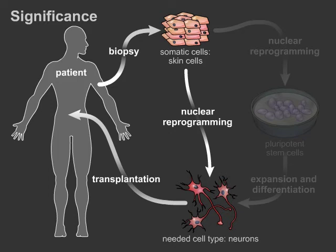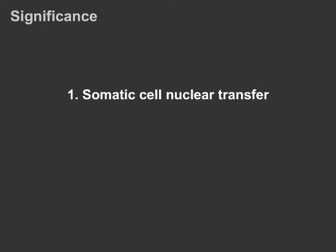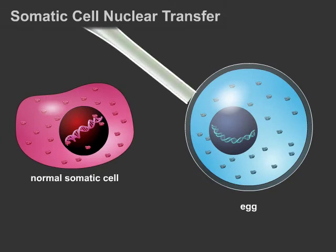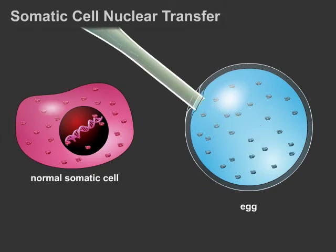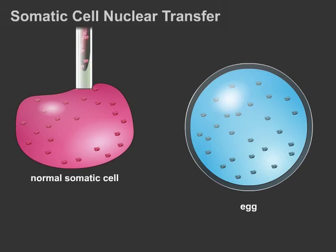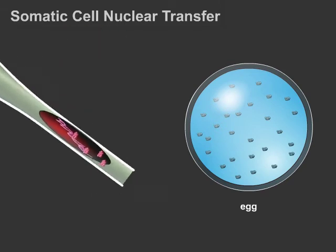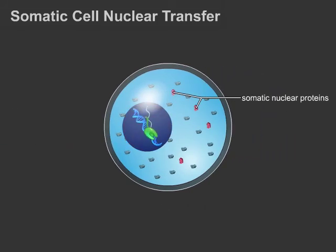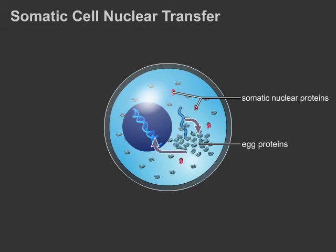There are currently three methods for achieving reprogramming: somatic cell nuclear transfer, cell fusion, and direct reprogramming. In somatic cell nuclear transfer, the nucleus of a somatic cell is injected into an egg that has had its own chromatin removed. When the donor nucleus is transferred to an enucleated egg, some somatic proteins are also transferred. However, the large volume of egg cytoplasm dilutes somatic factors, allowing the embryonic transcriptional program to dominate and reprogram somatic chromatin such that egg proteins are produced. Somatic cell nuclear transfer can lead to the development of a normal blastocyst from which embryonic stem cells can be derived for transplantation therapies. This process is termed therapeutic cloning.